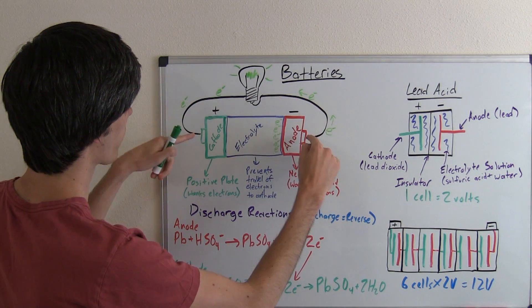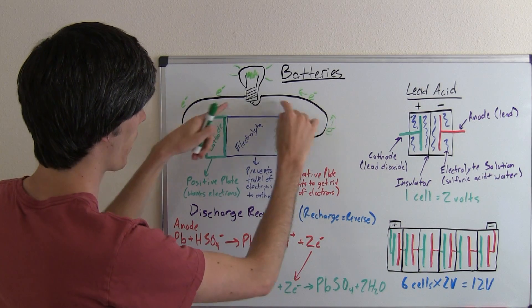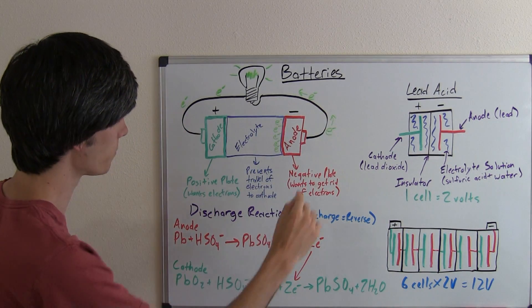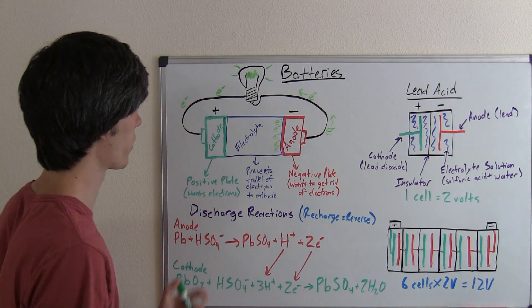So, when you connect a coil or a wire between these two ends of the battery, you allow that transfer of electrons to occur. So the electrons will leave the anode, and they will travel to the cathode.